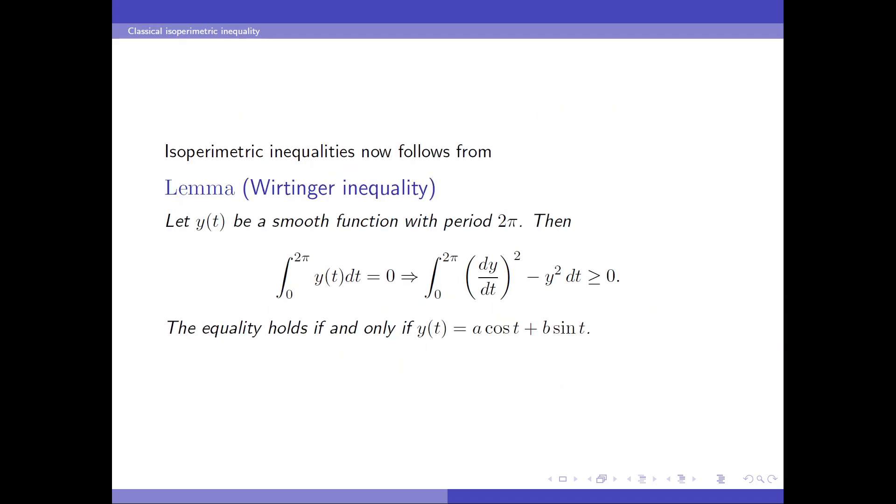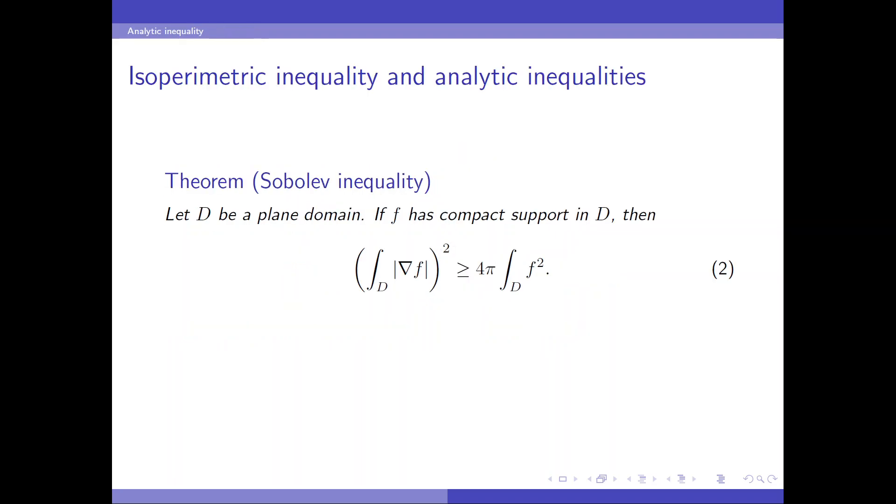So this finishes the proof of classical isoperimetric inequality in the plane. Next, let's study the relation of isoperimetric inequality and other analytic inequalities. The first one is the Sobolev inequality in the plane.